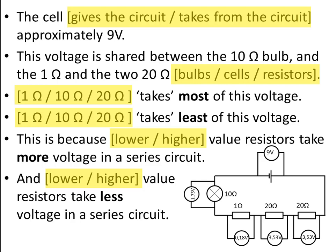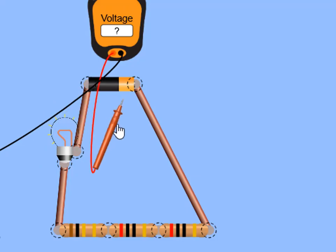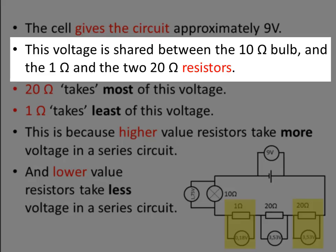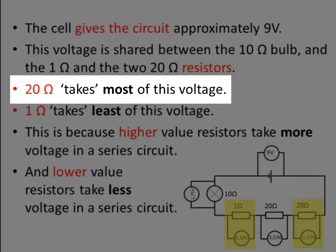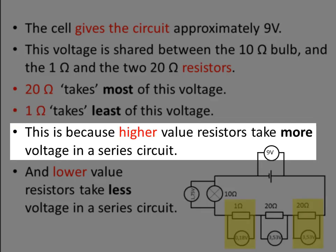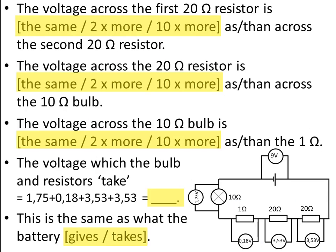Let's answer these questions. The cell gives the circuit approximately 9 volts — we saw that because we measured 9 volts across the battery. This voltage is shared between the various components: the 10 ohm bulb, the 1 ohm resistor, and the two 20 ohm resistors. The 20 ohm resistors take the most voltage; the 1 ohm resistor takes the least. This is because higher value resistors take more voltage in a series circuit, and lower value resistors take less voltage.